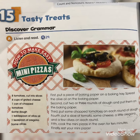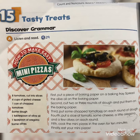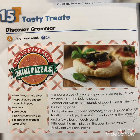The second step: cut two or three rounds of dough and put them on the baking paper. The third step: put some chopped tomatoes on each round of dough.